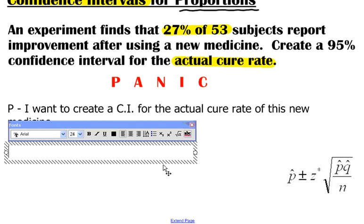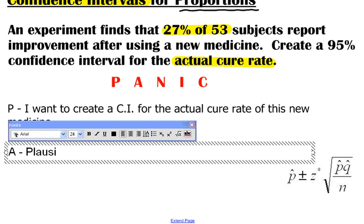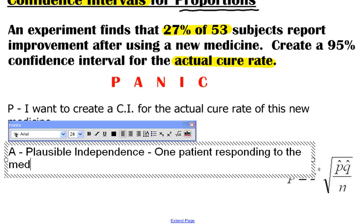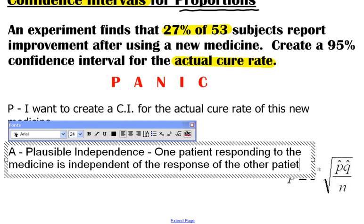So now I'm ready to go to A, my assumptions and conditions. There are a number of different assumptions and conditions that we should check depending on the type of confidence interval. But for confidence intervals for proportions, the first one we want to check is plausible independence. And in this case, we could say that one patient responding to the medicine is independent of the response of the other patients.